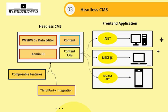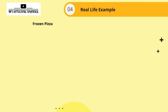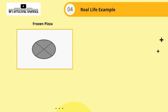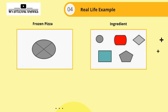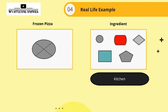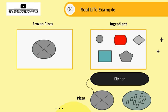Let's look at a real-time example. Think of a frozen pizza you buy from the market — when you bake it, you always get that same frozen pizza. But if you buy separate ingredients from the market and have your own kitchen, you can make pizza, pasta, or whatever you want. The frozen pizza is like your traditional CMS, whereas using separate ingredients to build whatever you want represents the headless CMS approach — your visual representation can be a pizza or pasta, depending on what you build.